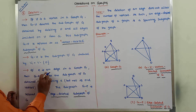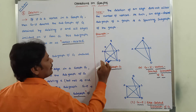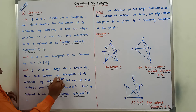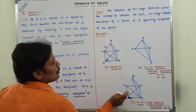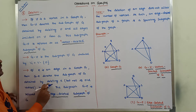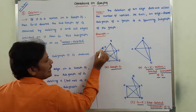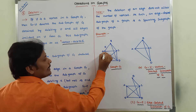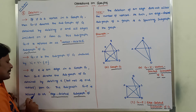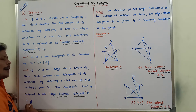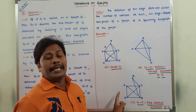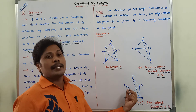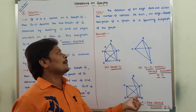Now the definition: if E is an edge in a graph G, then G minus E denotes the subgraph of G obtained by deleting E but not its end vertices. Only this edge is removed, but A and B are not deleted. This subgraph G minus E is referred to as the edge deleted subgraph of G. Whatever subgraph we get after deleting the edge E but not its end vertices, that subgraph is called G minus E, the edge deleted subgraph.